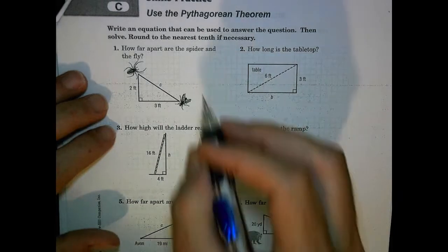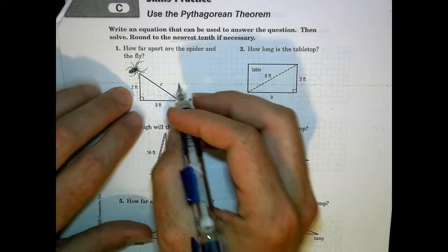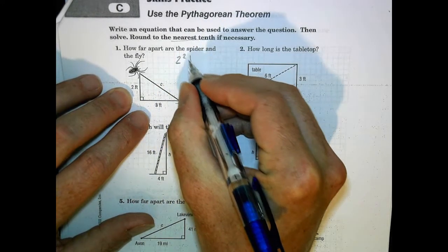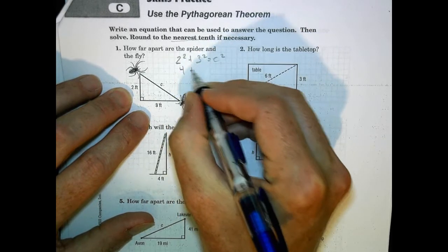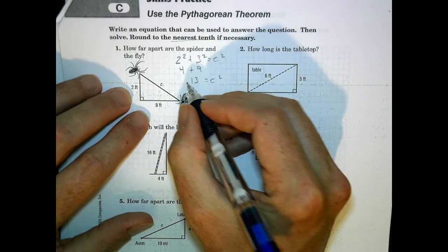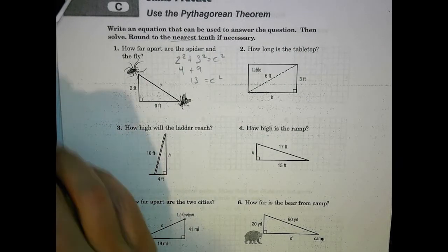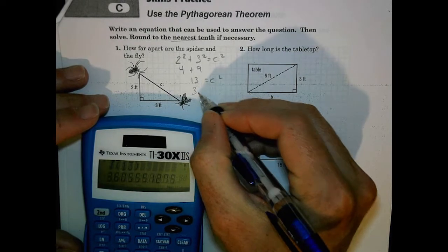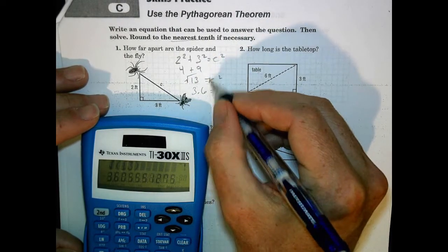Alright, here we go. We're going to use Pythagorean theorem to do this. We can round if necessary. So here we go. We have the two legs and the hypotenuse. So we have 2 squared plus 3 squared equals c squared. 2 squared is 4. 3 squared is 9. 9 plus 4 is 13 equals c squared. So c is going to be equal to the square root of 13. And the square root of 13 is going to be 3.6. About 3.6.